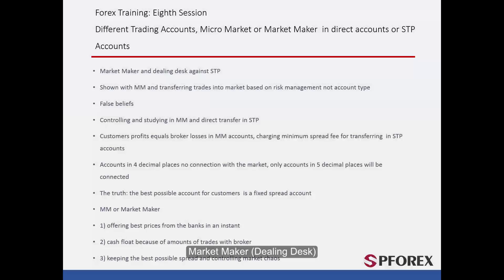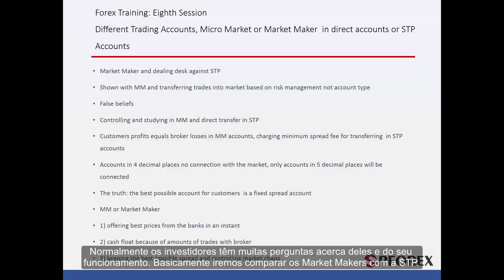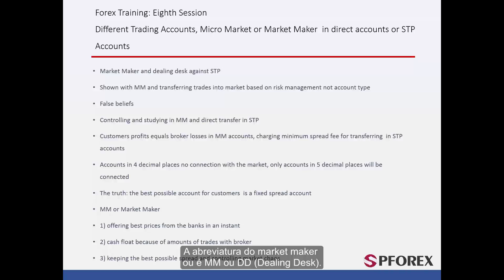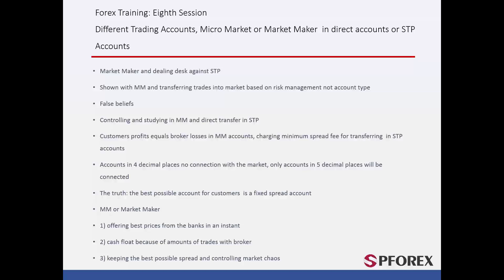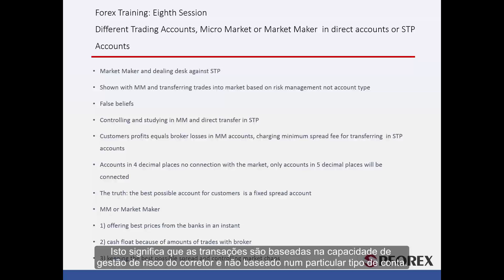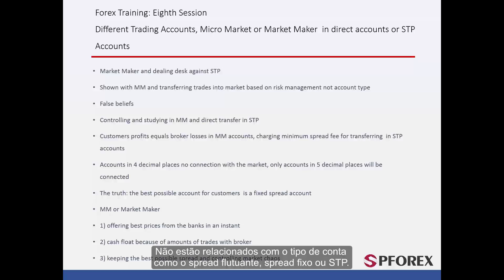It's time to introduce the market maker or dealing desk. Investors usually have a lot of questions about how they work. We are going to compare the market makers with the STP. The abbreviation of the market maker is either shown as MM or DD for dealing desk. They are brokers that accept the risk of holding a certain number of shares of a particular security in order to facilitate trading in that security. This means all transactions are based on the broker's risk management and not based on a particular type of account — they are not related to account type such as floating spread, fixed spread or STP.